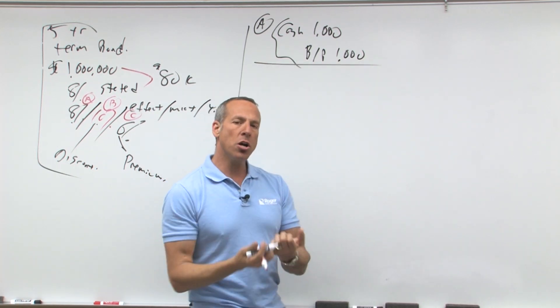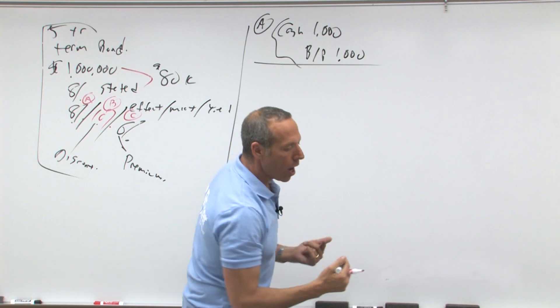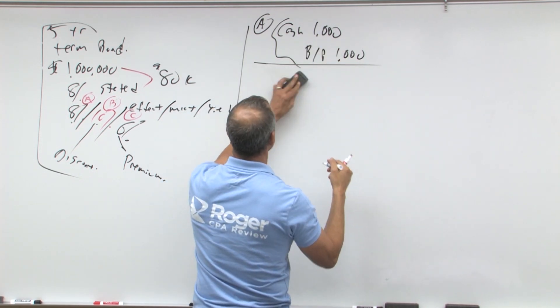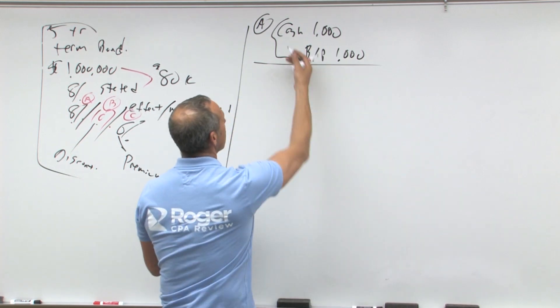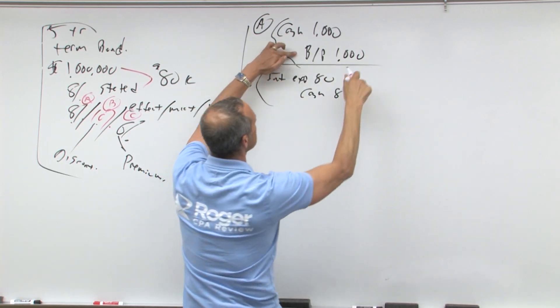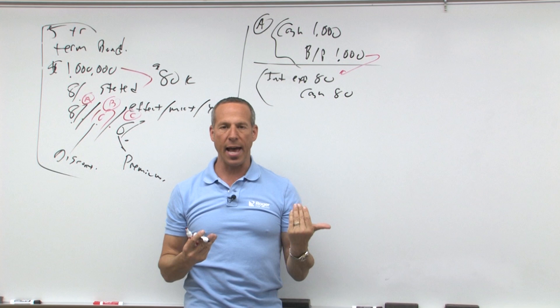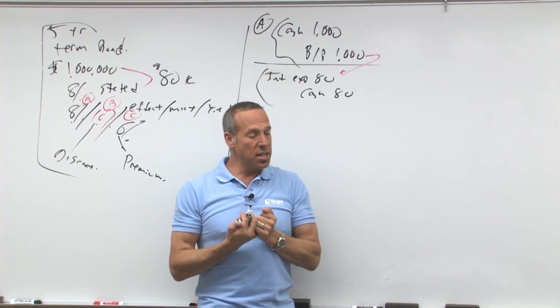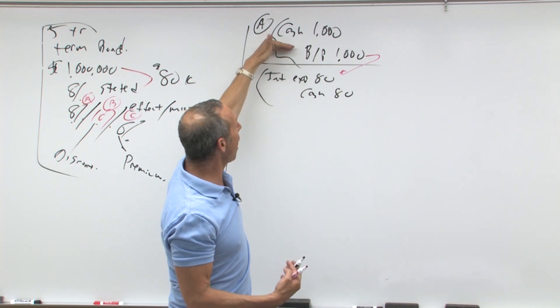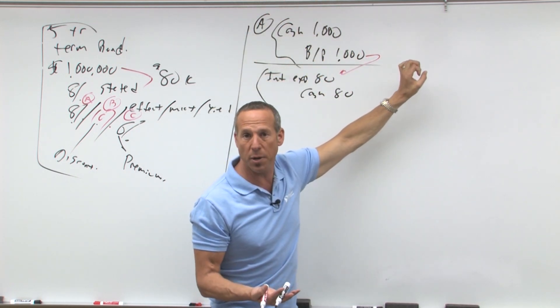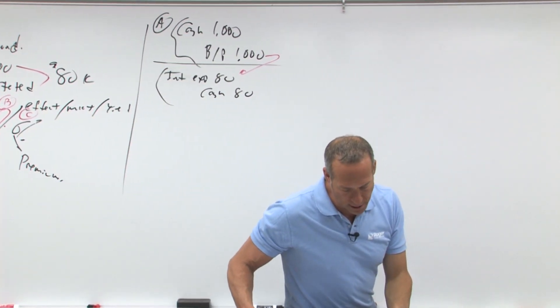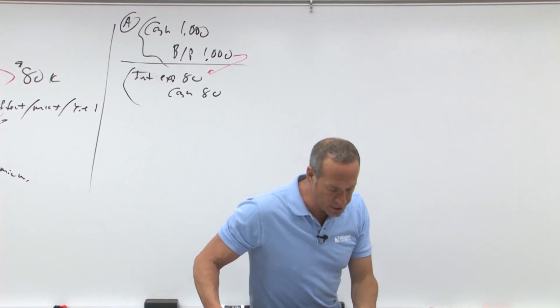What's going to happen every year? Every year you're going to pay me 8% of a million. I'm going to get some cash. So I'm going to debit cash. Now this is the guy that issued the bond. The person issuing the bond is going to credit cash for $80,000 and debit interest expense for $80,000. So notice it's costing him 8% of a million or 80 grand, he's going to pay out that much cash.